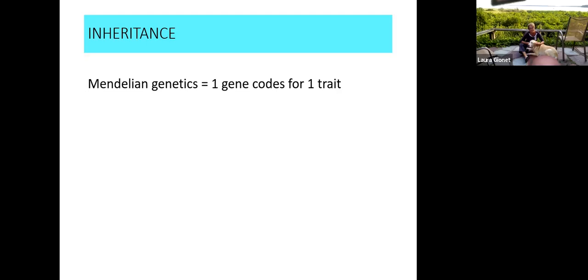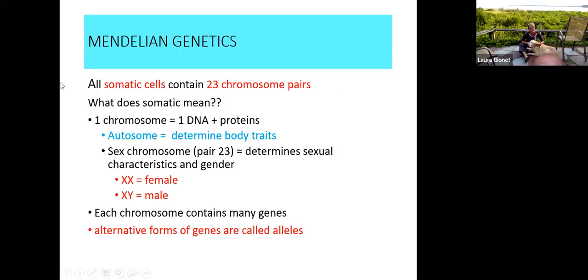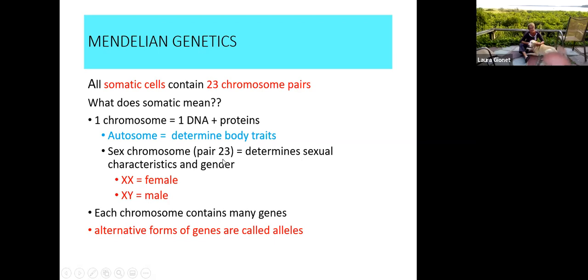Now we're going to look at inheritance. We have Mendelian genetics and non-Mendelian genetics. Mendelian genetics means one gene codes for one particular trait. Non-Mendelian means there's going to be some gray area involving multiple genes. All somatic cells contain 23 pairs of chromosomes — somatic meaning general body cells, all cells except sex cells. One chromosome equals one DNA molecule plus the proteins found there.